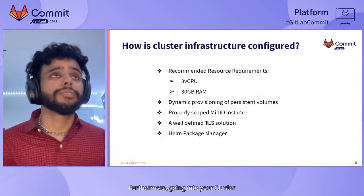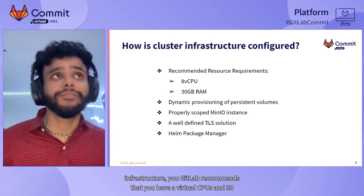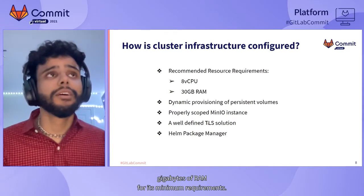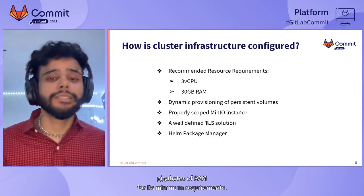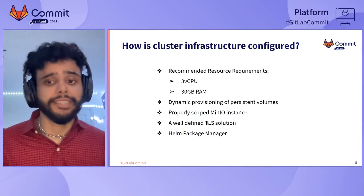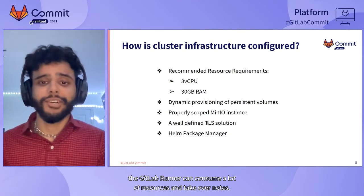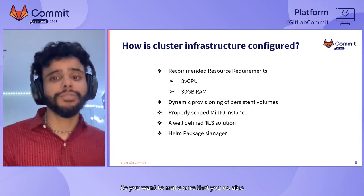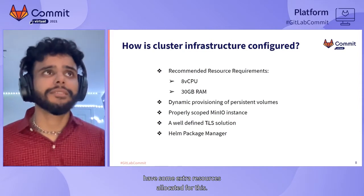GitLab recommends that you have eight virtual CPUs and 30 gigabytes of RAM for its minimum requirements. However, we've also seen that the GitLab Runner can consume a lot of resources and take over nodes, so you want to make sure that you also have some extra resources allocated for this.